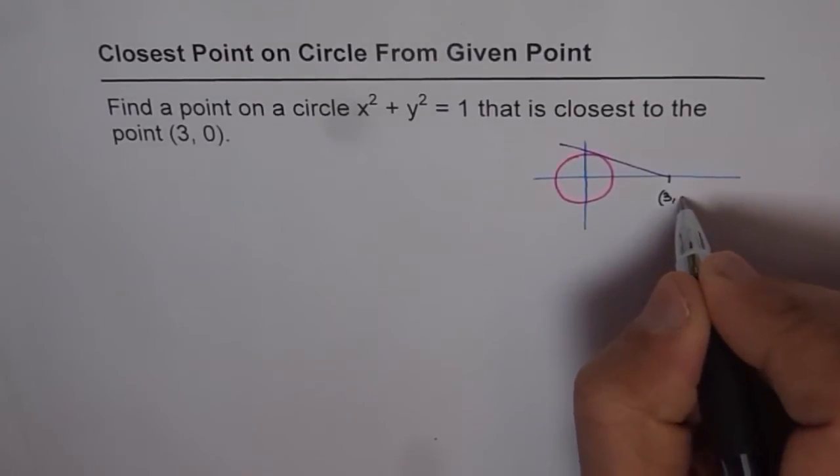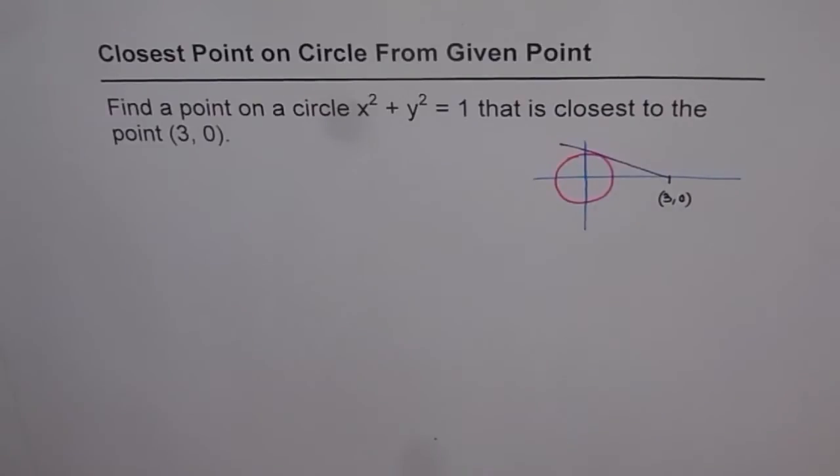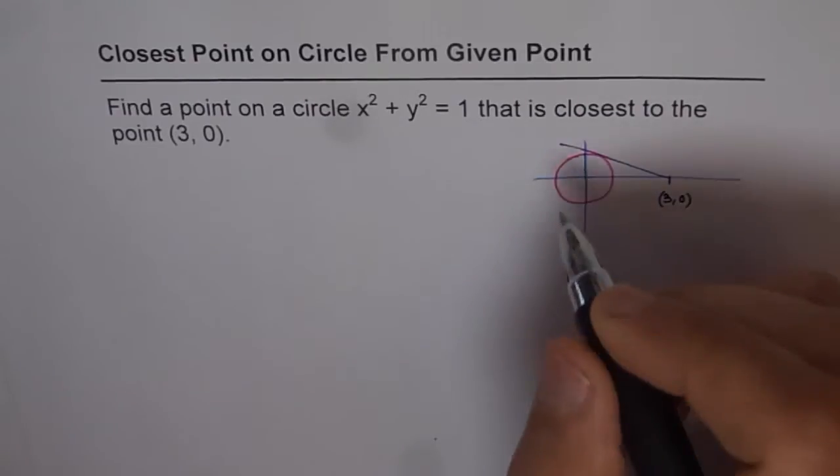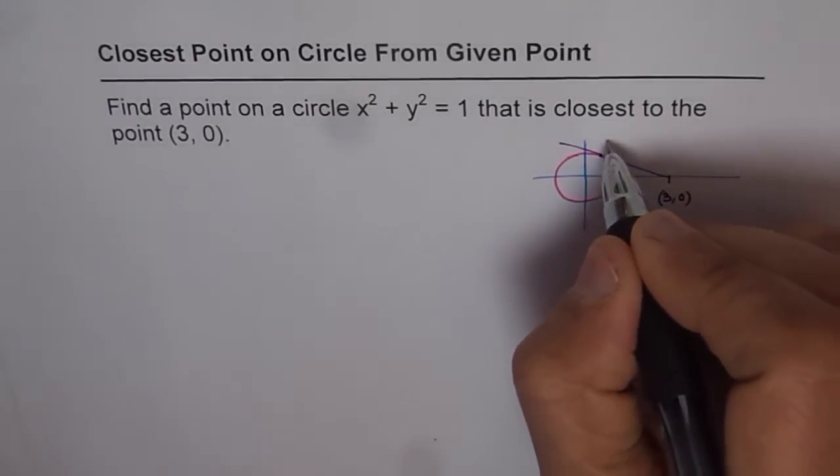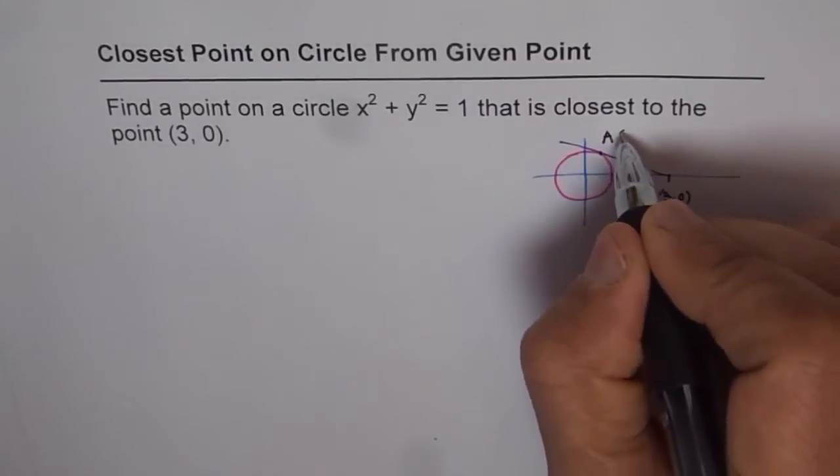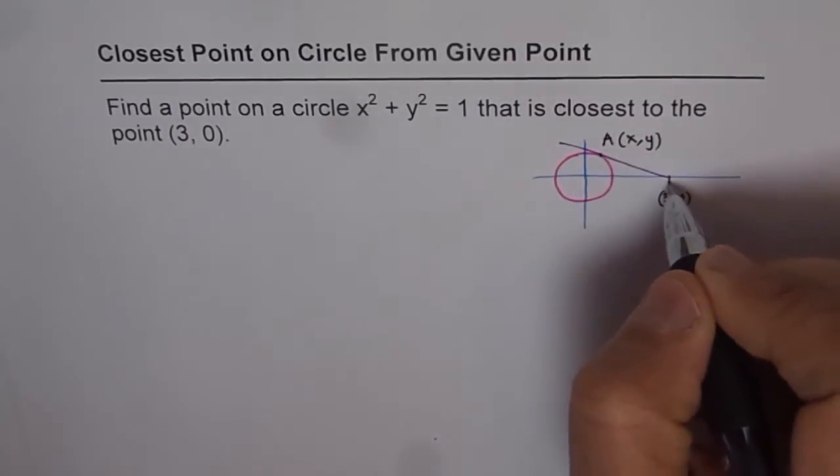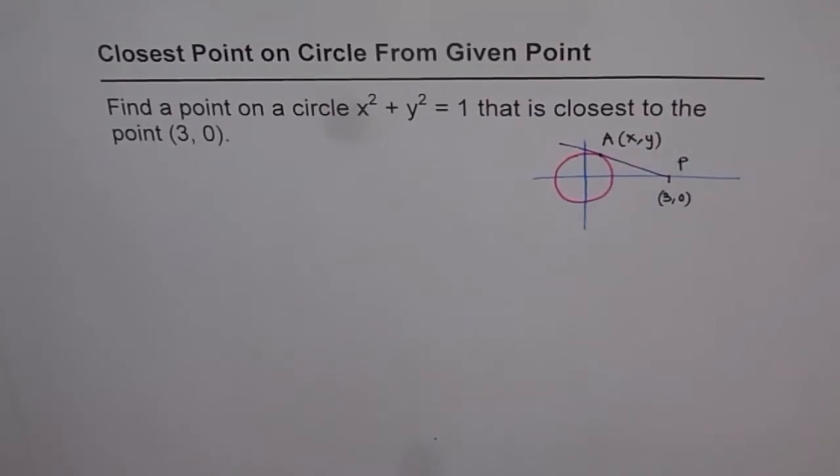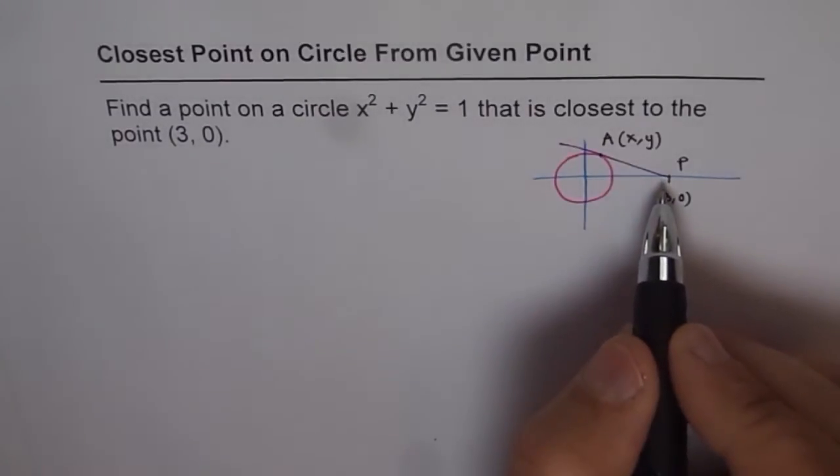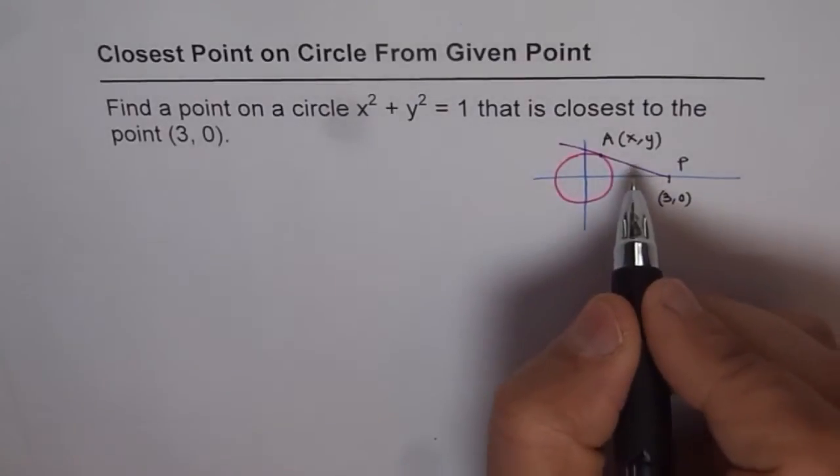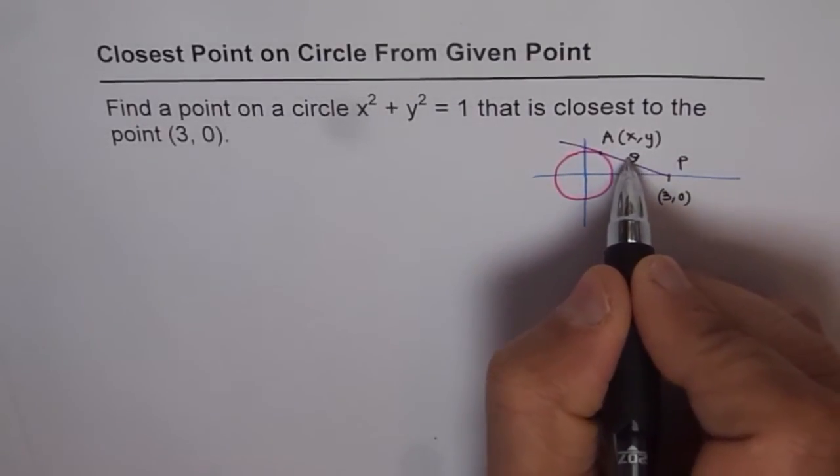So this is x point 3 and y value 0. And we will also assume that this point on the circle, point A whose coordinates are x and y, is closest to this point P. Now let's say the distance AP, let us give it a variable s, the distance.